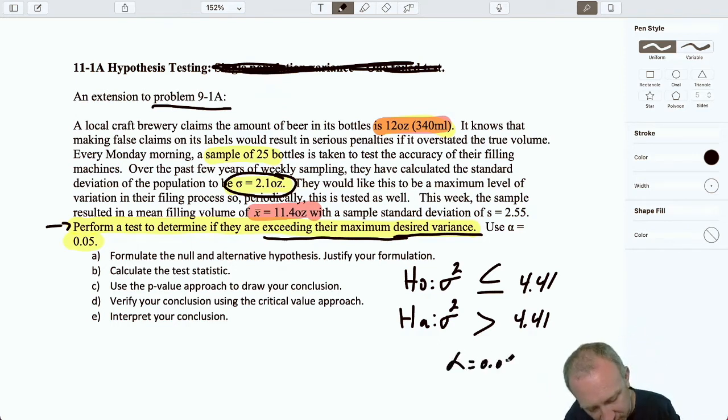One of the things that is advisable is to convert your numbers always to a variance. If you're given variances, fine, keep them as variances. If you're given standard deviations, it can be easier just to convert everything to a variance and then do your analysis. I have a standard deviation of 2.1. So that gives me a hypothesized variance of 4.41. We're doing a test to see if we're exceeding that target. So I want to test to see whether our variance gives us evidence to show that the population variance is greater than 4.41. Our level of significance is 0.05.